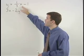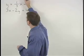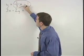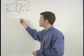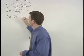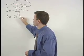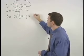we can substitute this one-third x minus 1 in for the y in our second equation which becomes 3x minus 2 times parentheses one-third x minus 1 equals 4.